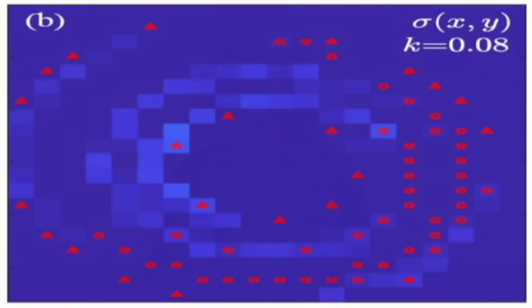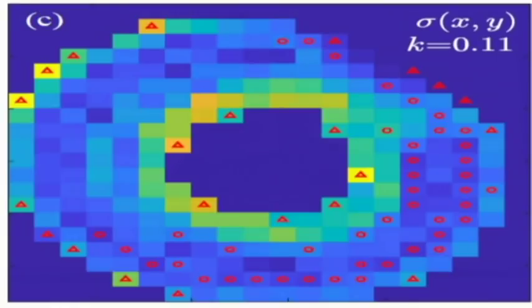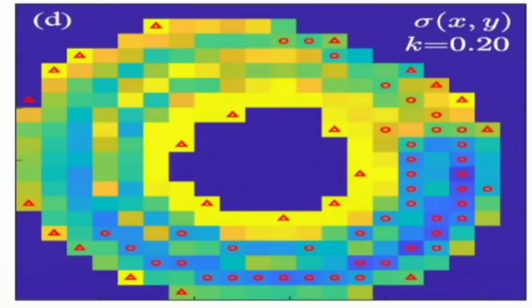And we were very surprised to discover that these local synchronizations start not from where most of the activity is, but it starts from the sparse areas of the attractor, in states where the system rarely visits.